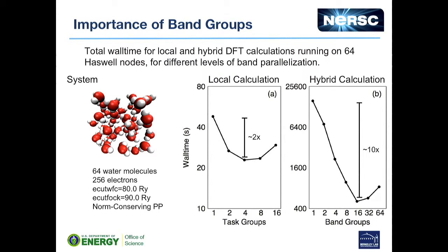Before going into some of the things we've done to ensure this part of the calculation scales well, I want to focus for a bit on how Quantum Espresso currently — or at least prior to our changes — parallelized these calculations. Quantum Espresso supports multiple forms of parallelization. The baseline default is plane wave parallelization, but there are also other forms — for example, task group parallelization, which is applicable to local and semi-local functionals, and band group parallelization, which is applicable exclusively for exact exchange calculations.